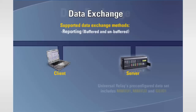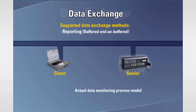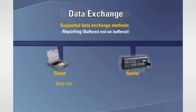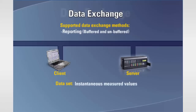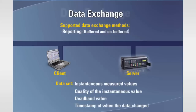The Universal Relay's pre-configured dataset includes MMXU1, MMXU2, and GGIO1. The dataset is grouped and formatted as either logged or report data. Some examples of the information that can be included within the dataset are instantaneous measured values, the quality of the instantaneous value reported, the deadband value, and a timestamp of when the data changed. The report process starts when the client writes the enable. Once enabled, the actual values are evaluated to determine if an event such as a change in state has occurred. Any values within a dataset that have passed the event criteria form a report, which is sent to the client including the trigger or event which caused each data value to be included.